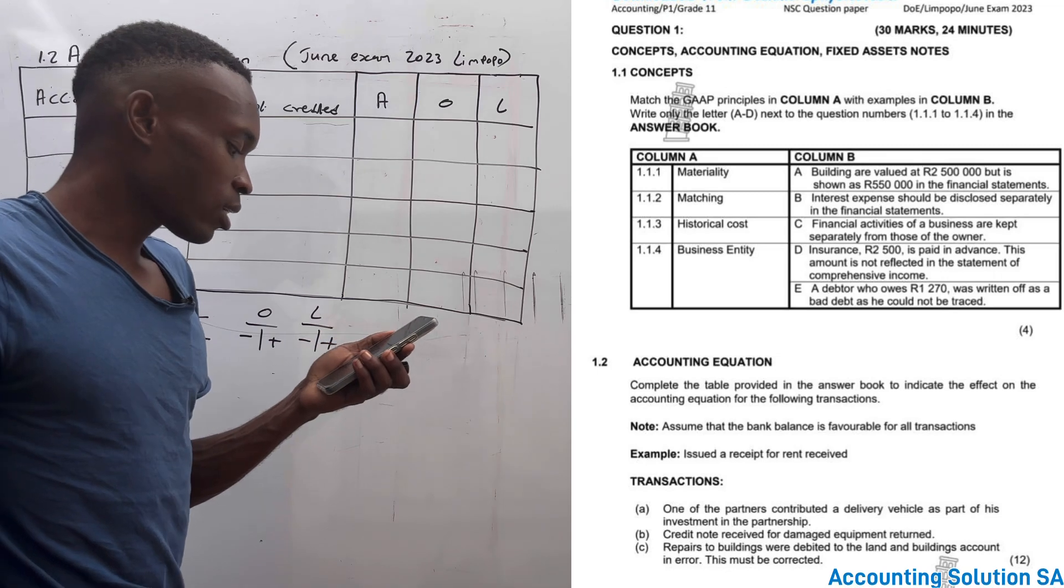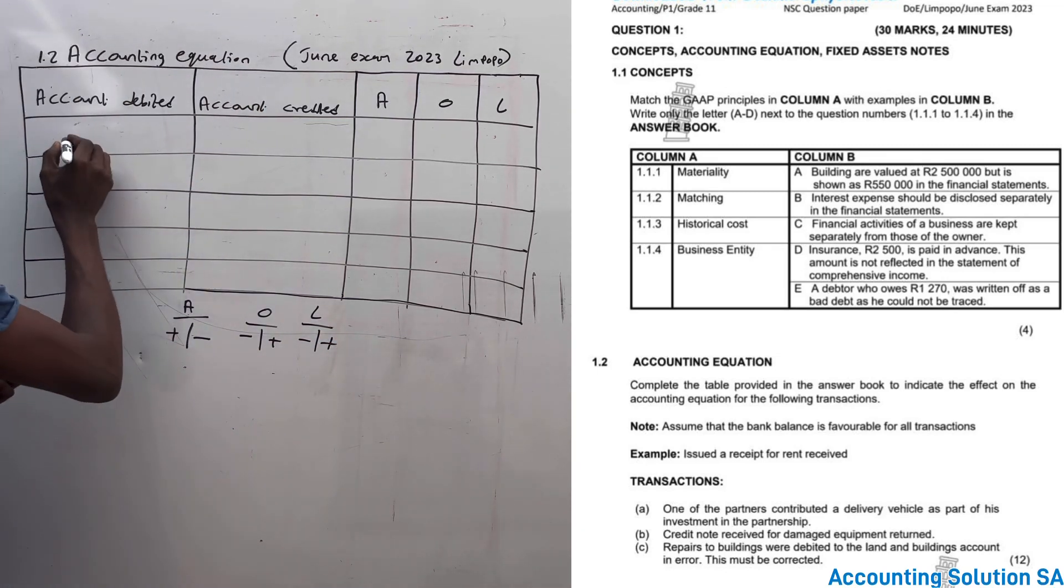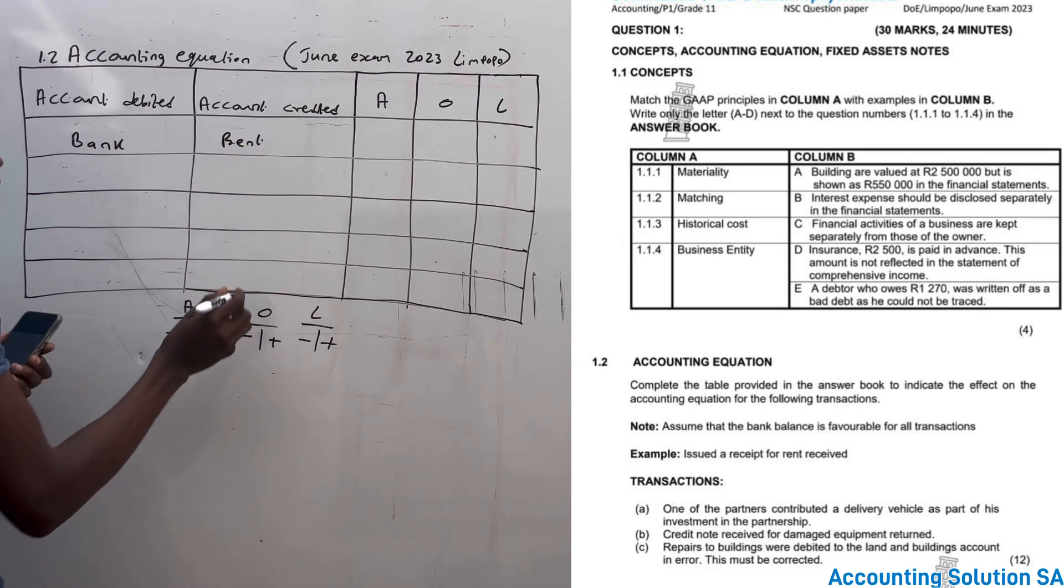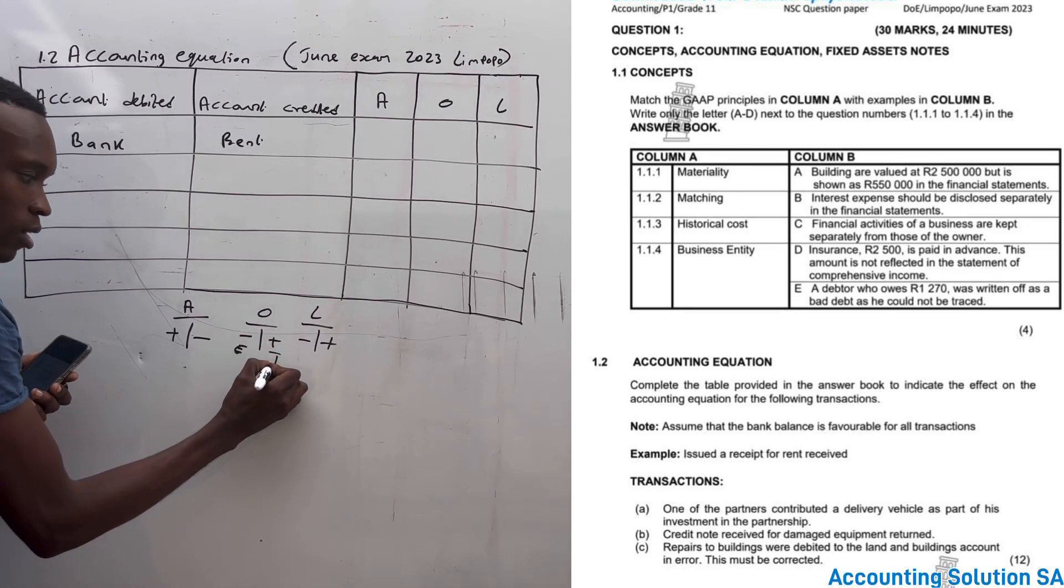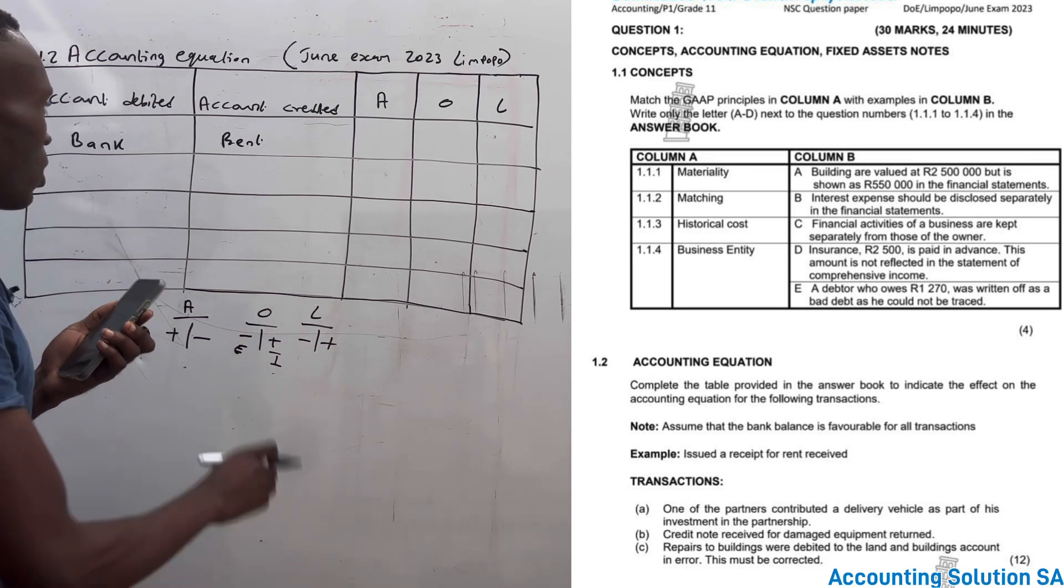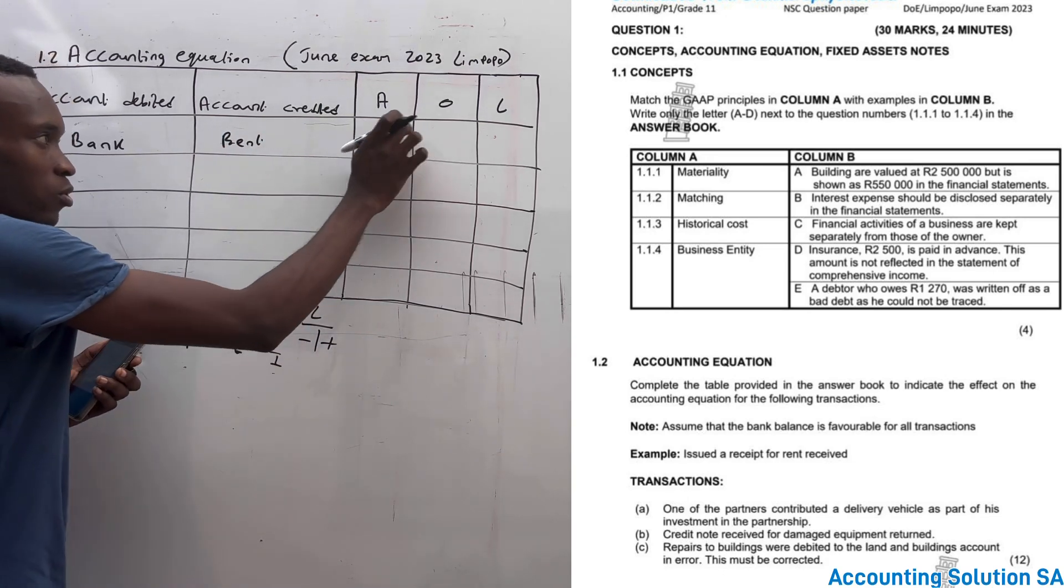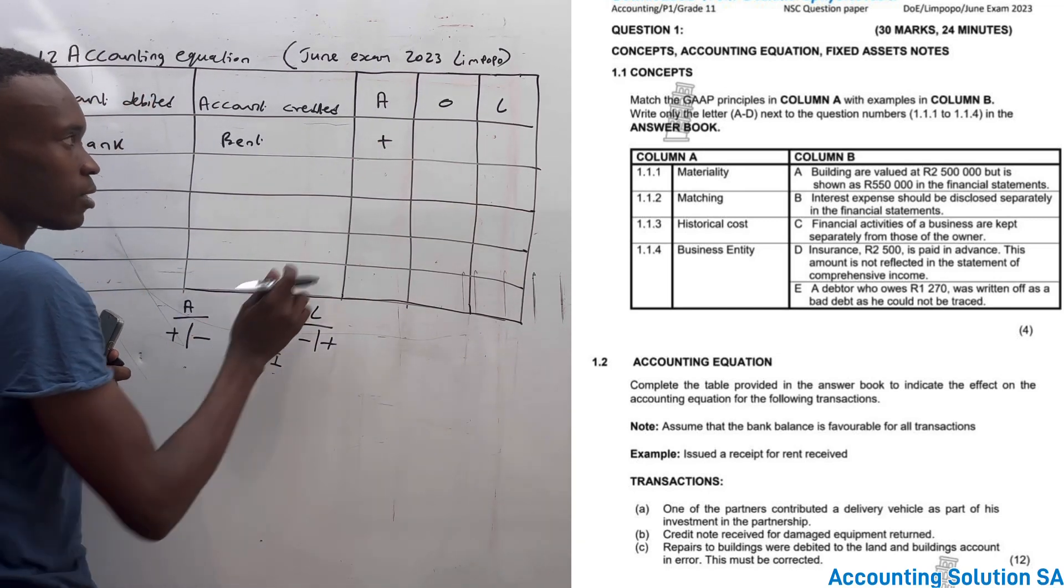They said that we have received bank. Bank is increased because we receive cash for what? For rent. Rent is an expense. This side is for expense under owner's equity, this side is for income. Now we debit and we credit, so we have to show the effect: assets increase and expense has decreased. This side is unchanged.